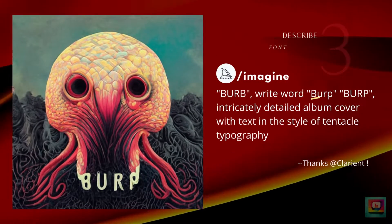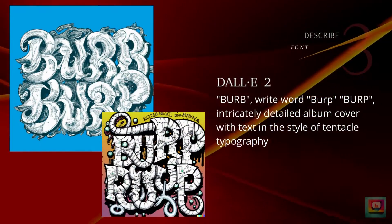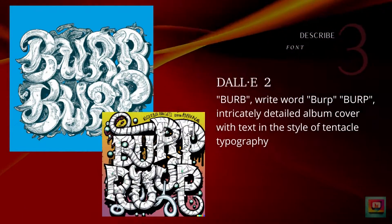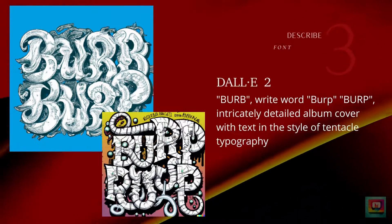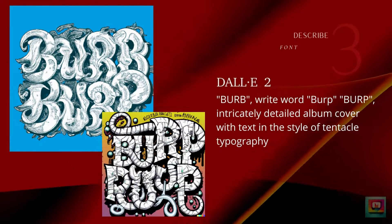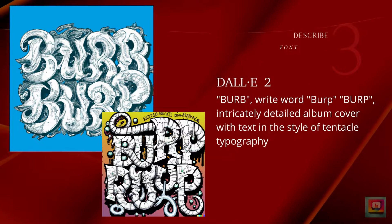Here are the results for a tentacle font using the same prompt in DALL-E 2. It seemed to catch the gist the first time, but not quite — it's 'burp,' but it's also 'rooop.'